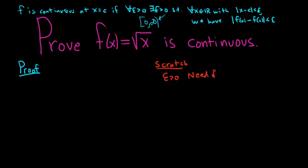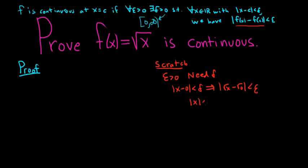We know that the distance between x and c is less than delta, and c is 0, so we know that |x − 0| is less than delta, and we want this to imply |f(x) − f(c)| less than epsilon. Well f of x is the square root of x, and f of c is f of 0 which is the square root of 0. So we have |x| less than delta and we want this to tell us that |√x| is less than epsilon. We can drop the absolute value to get √x less than epsilon, and squaring both sides gives x less than epsilon squared.